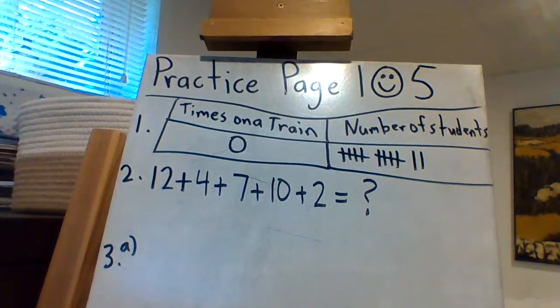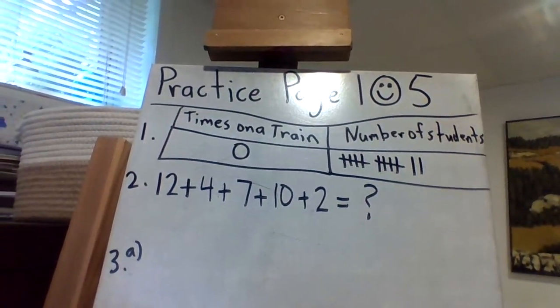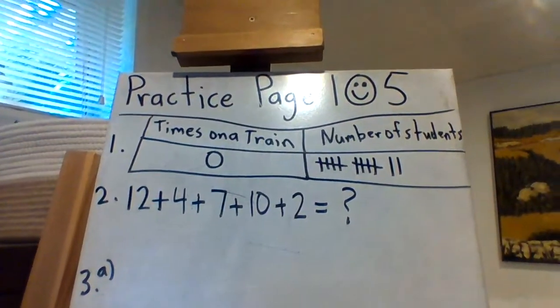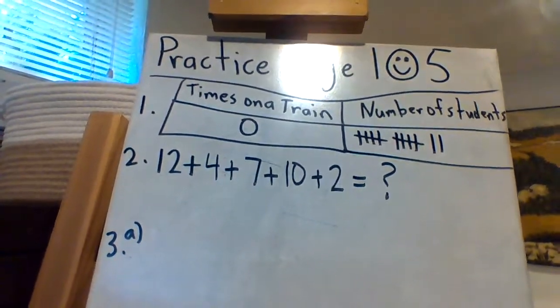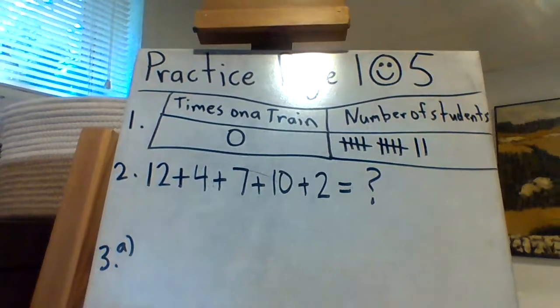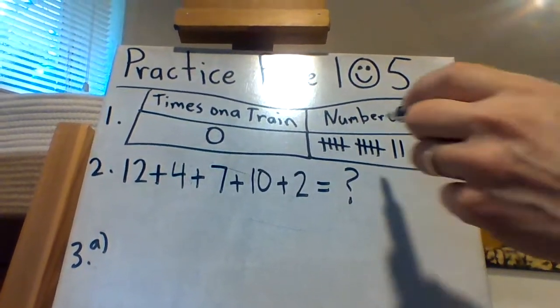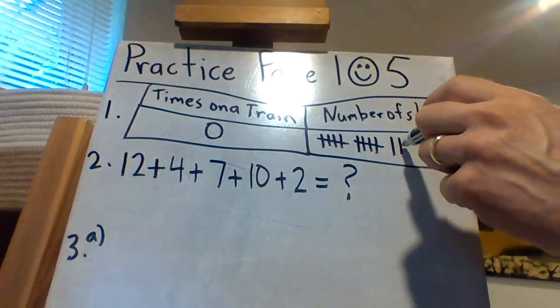So I put for number one, times on the train zero, and then the number of students in tallies. Because the first question says how many children have never been on a train, and here is the answer. The question is, do you know what that answer is? Well, you know how to count by five, so we have five, ten, eleven, twelve.